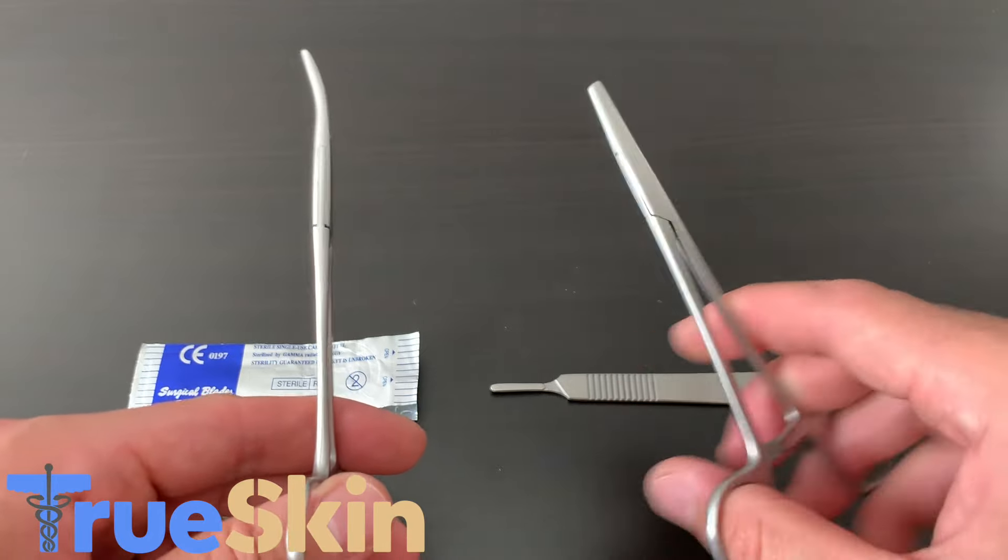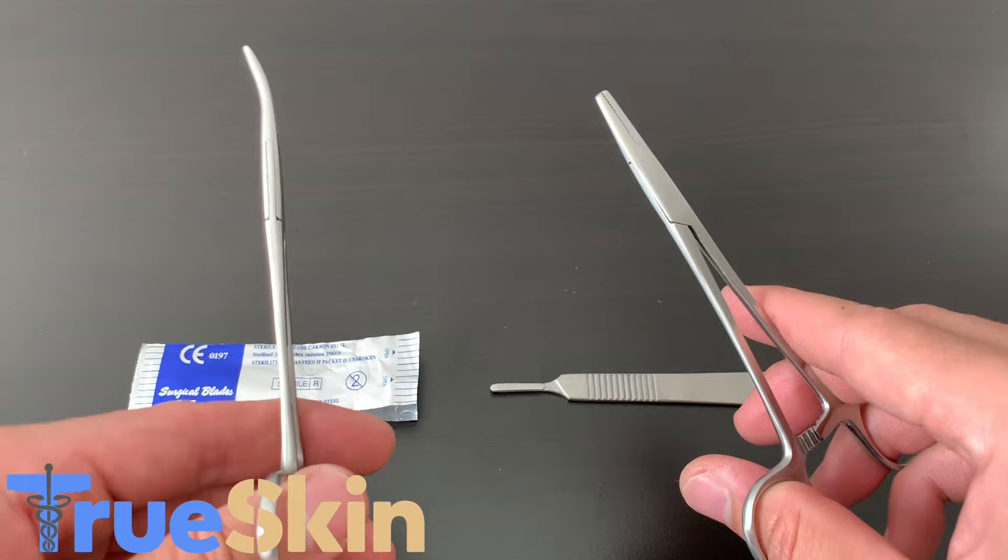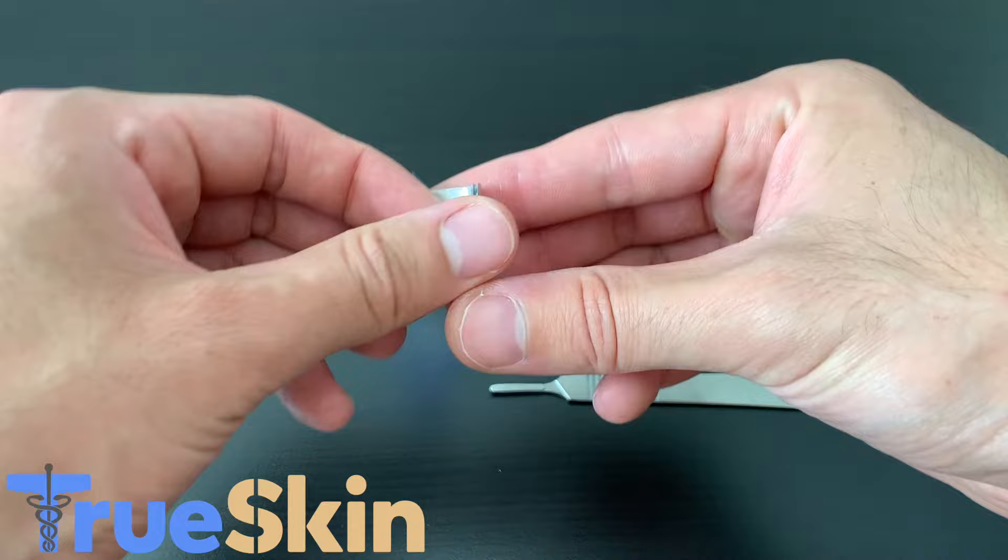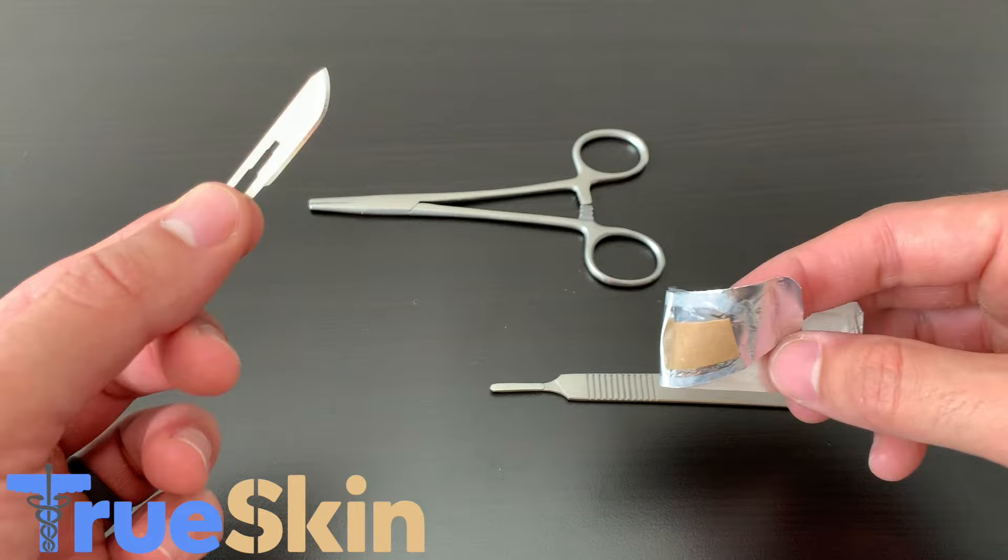To install the scalpel, grab your needle holders. That's different than the curved hemostats—those will not grab the blade as well, so we'll put those away. Start by opening up the scalpel package and take out the blade.